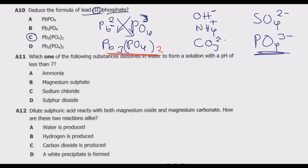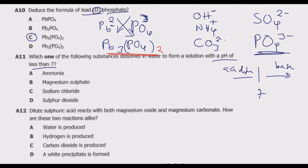Question A11: which substance dissolves in water to form a solution with a pH of less than 7? A pH of less than 7 means the substance is an acid. On the pH scale, 7 is pure water, greater than 7 is a base or alkaline, and less than 7 is an acid — becoming more acidic as it approaches 0, and more basic as it approaches 14.